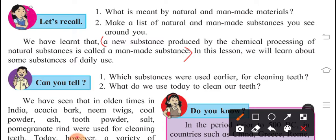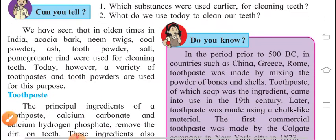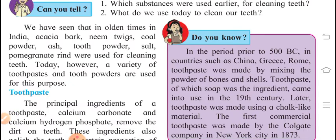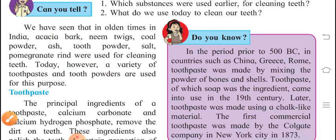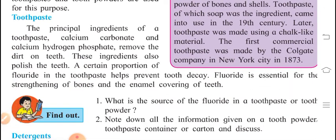Next, which substances I used earlier for cleaning teeth? As we know, the ash, tooth powder, salt, coal powder, all these things we use to clean teeth. But nowadays, we are using obviously toothpaste, tooth powder and all. Here, we have seen that in olden times in India, acacia bark, neem twigs, coal powder, ash, tooth powder, salt, pomegranate shrink were used for cleaning teeth. Today, however, a variety of toothpaste and tooth powders are used for this purpose. So, first thing we have to discuss about here, the things which we are using in our day-to-day life. Very morning, we are starting with toothpaste to clean our teeth. So, how toothpaste comes?